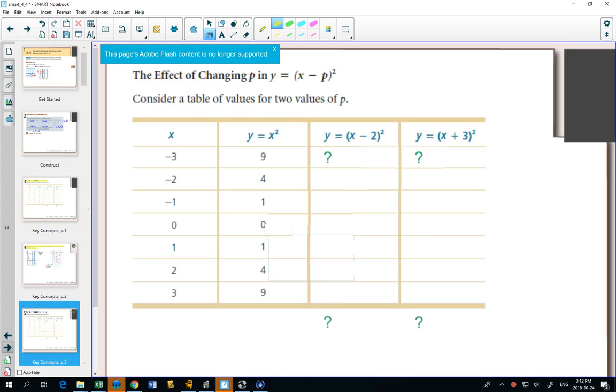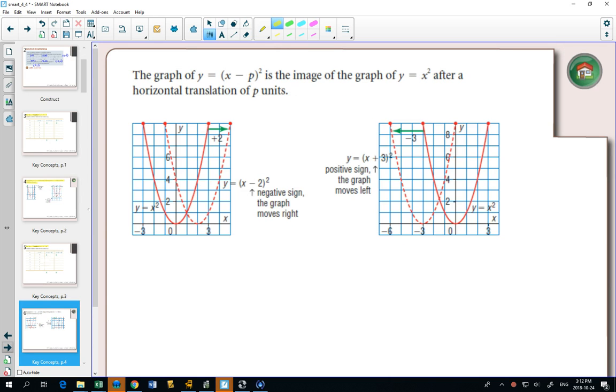Next, the effect of changing the letter p if we write x minus p squared. That moves it left and right. So if you have x minus 2 squared with the negative sign, that moved it 2 to the right. And if you have x plus 3 squared, that moves it 3 to the left.